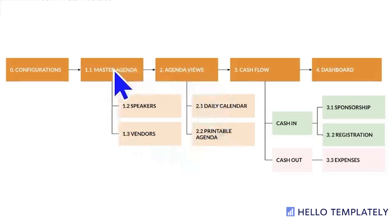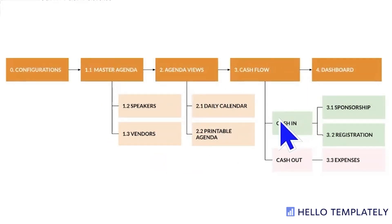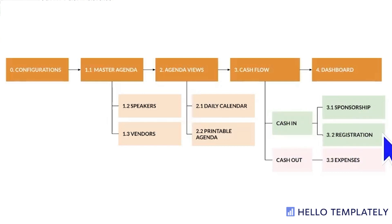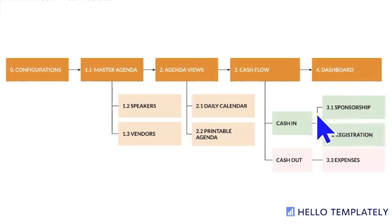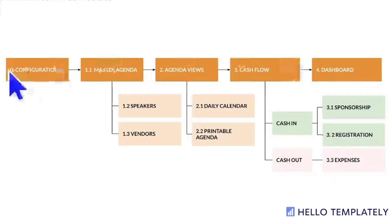From agenda management we move into the cash flow. We have the cash-in area, which covers registration and ticket sales, and corporate sponsorship. Then we have expenses, and all of these areas together feed into your dashboard.